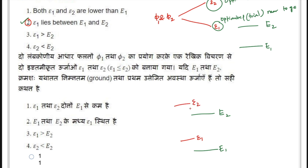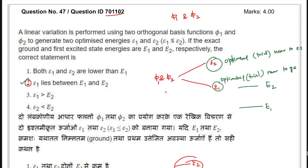So ε2 lies somewhere above e2. In that case, let's evaluate the options: option 1 says both ε1 and ε2 are lower than e1 — that's incorrect. Option 2 says ε1 lies between e1 and e2 — that's correct. Option 3 says ε1 is greater than e2 — that's not correct. Option 4 says ε2 is smaller than e2 — again, that's not correct. This answer holds when we assume ε1 corresponds to the optimized ground state energy and ε2 to the first excited state, but that is not clearly mentioned in the question.